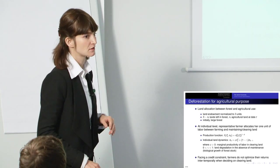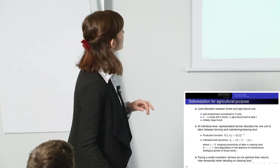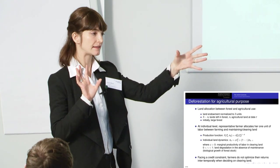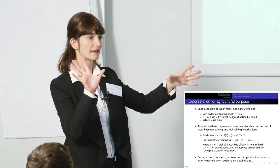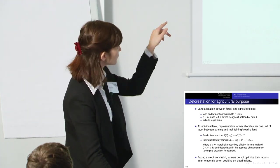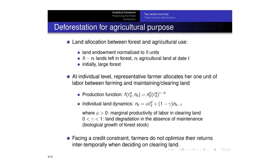This is a presentation of the model briefly. So I have two stock of land. One is forested land and the other is agricultural land. And deforestation is just a conversion from one stock to the other. So NT is my agricultural land.